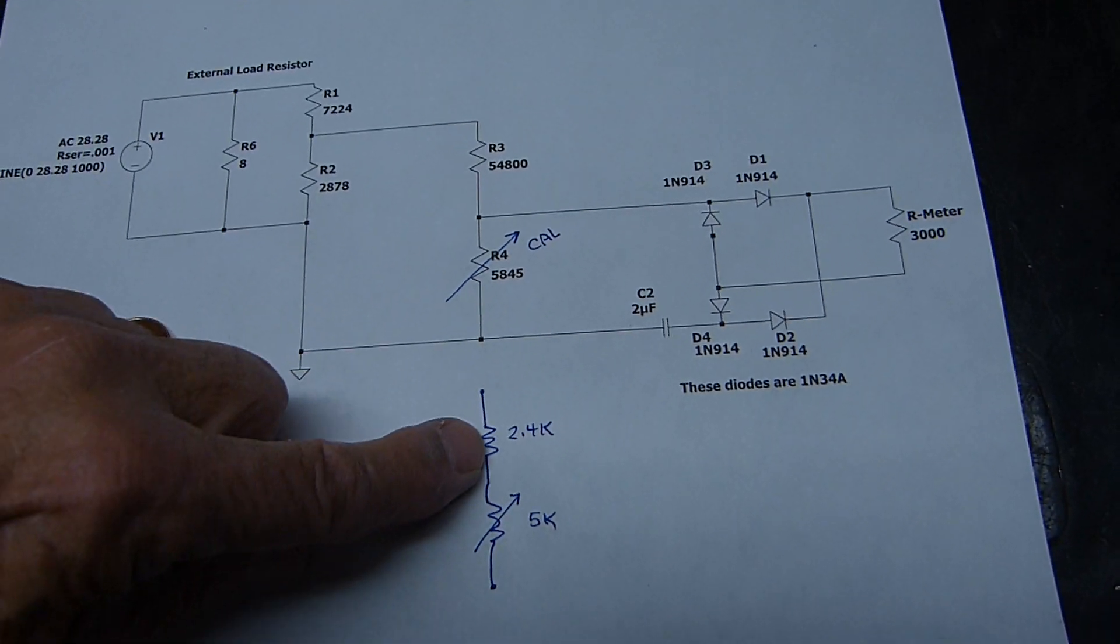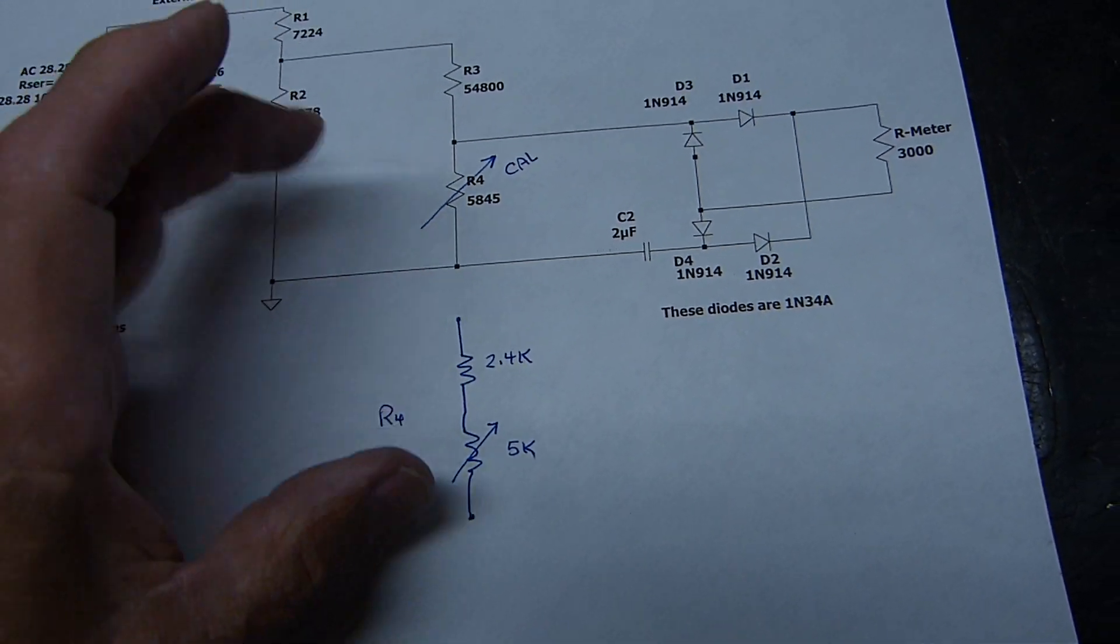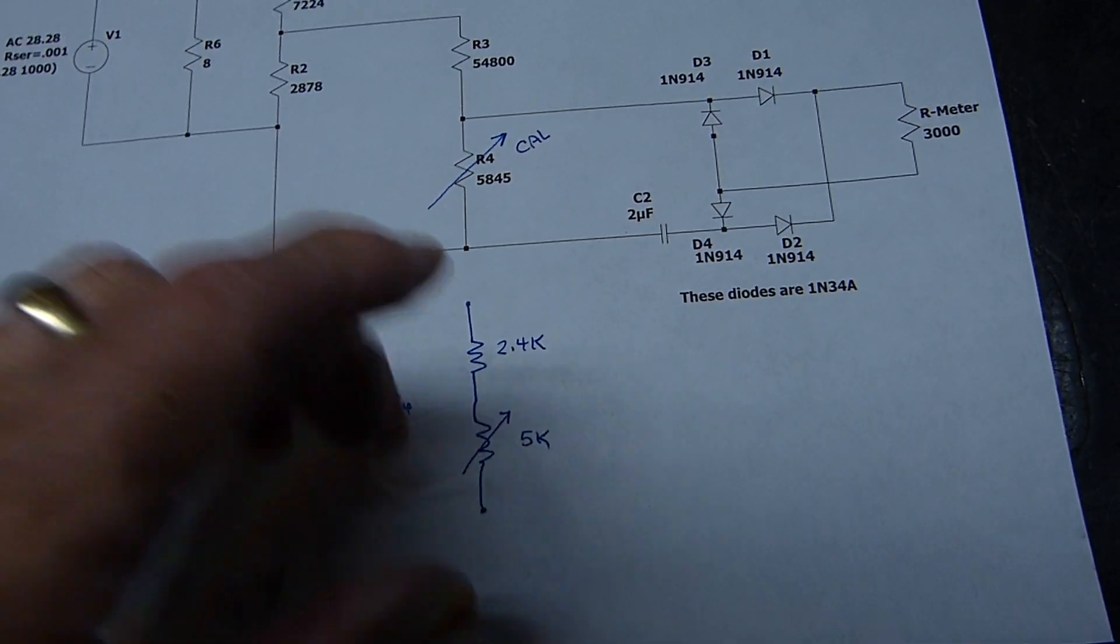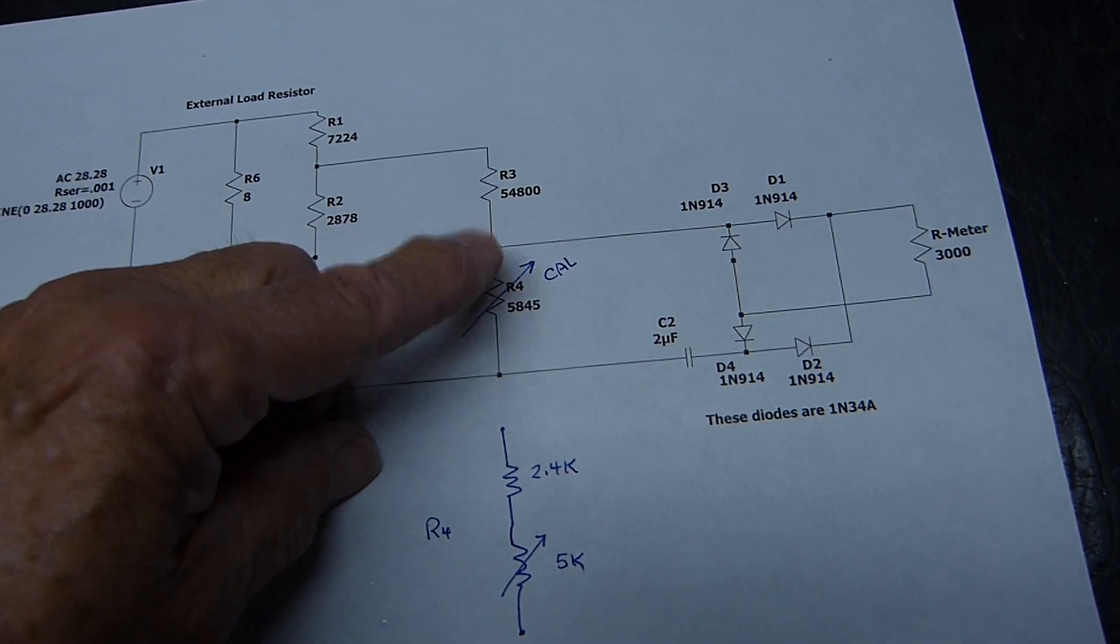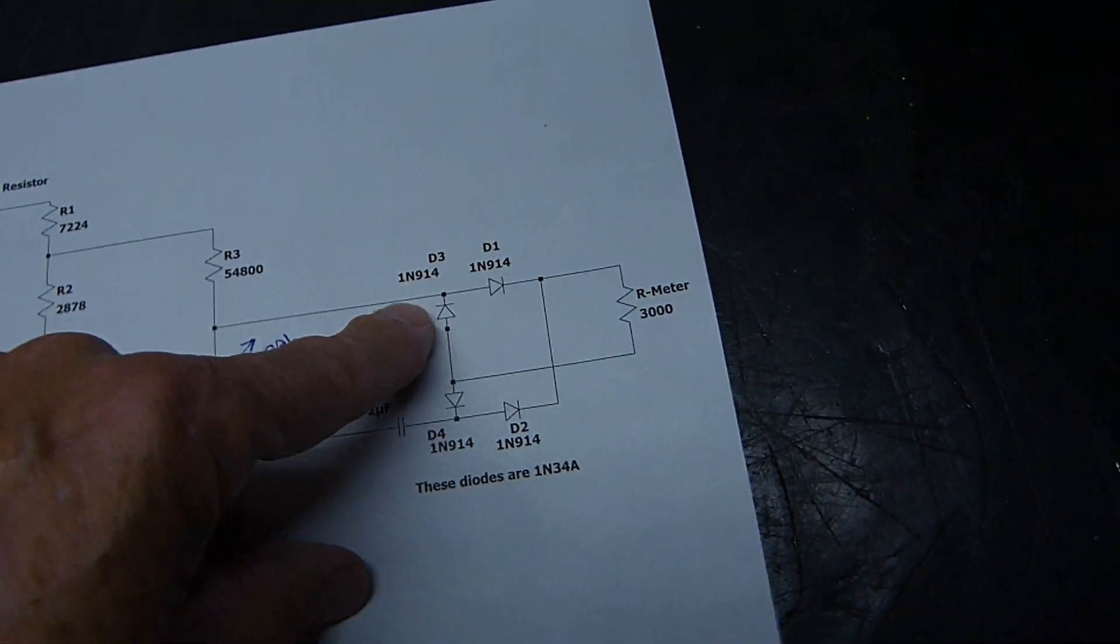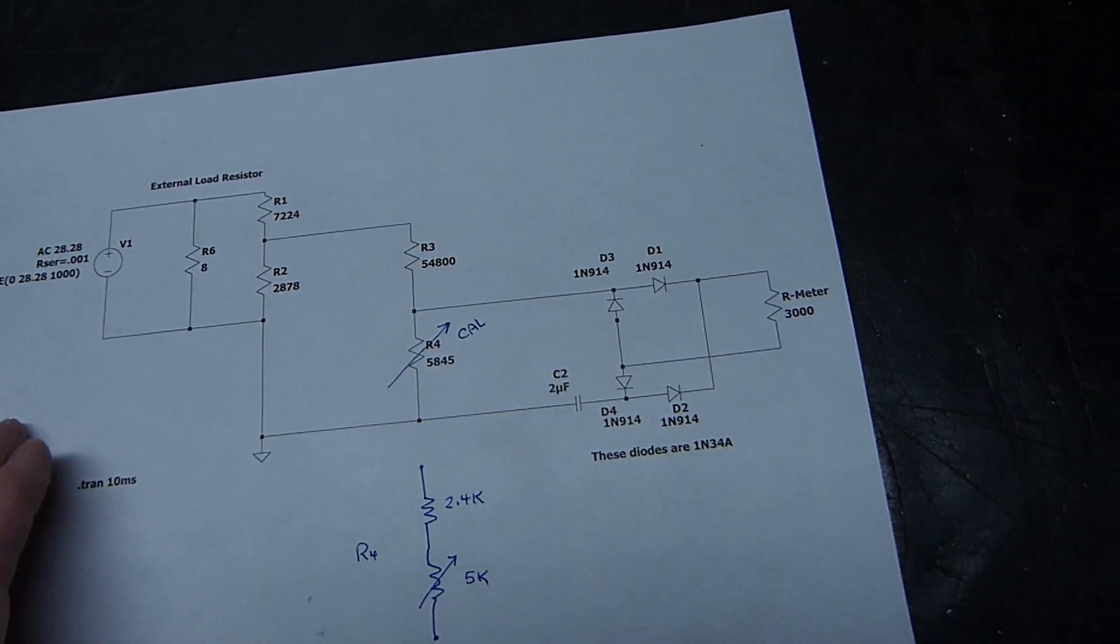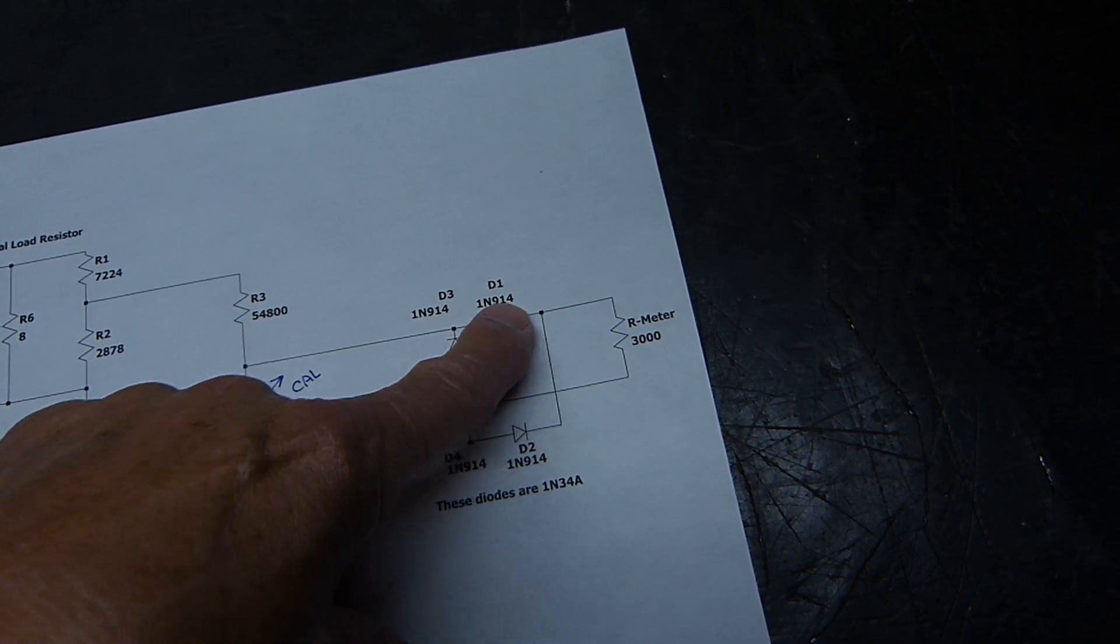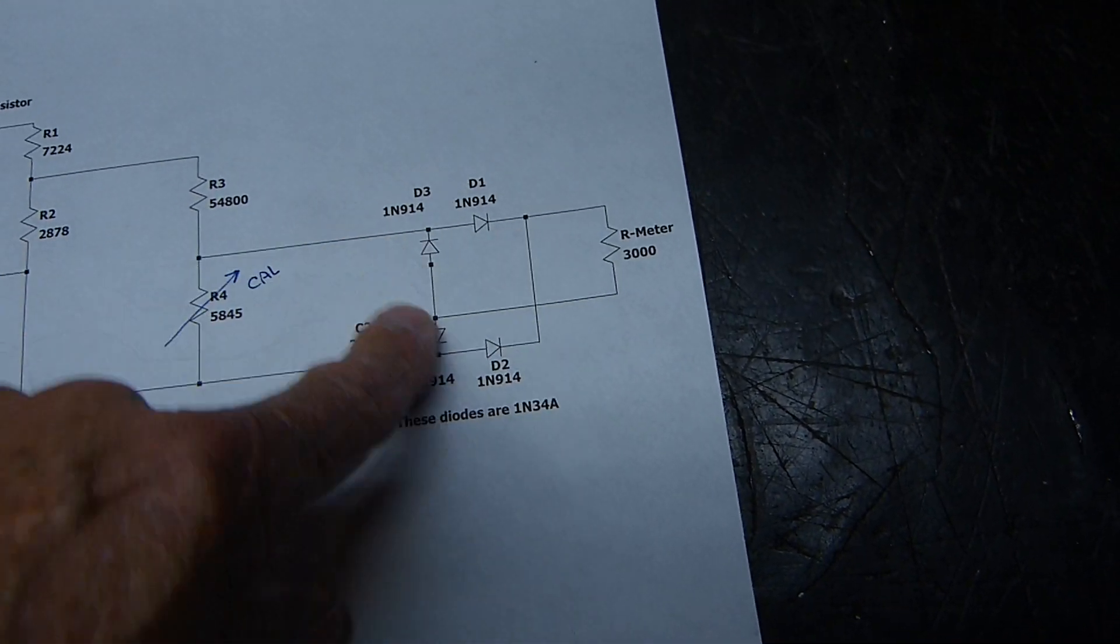54,000 and this one is about 5,840, but I made this a cal pot by putting a 2.4k in series with a 5k so that, you know, about halfway in the middle of this I'll get this right here. This is the last one that you want to make a little bit of a cal pot. This is just a schematic mostly.